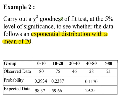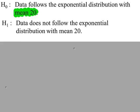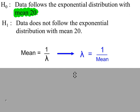Example 2. We need to see if our data fits an exponential distribution with a mean of 20. We're going to work out these missing values. So H0 and H1, making mention of the distribution as well as the parameter. So the mean is 20, so lambda is 1 over 20.